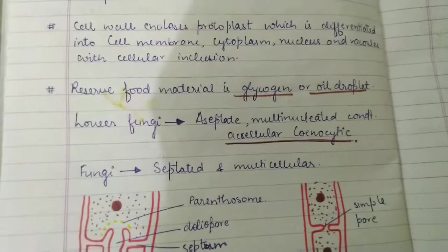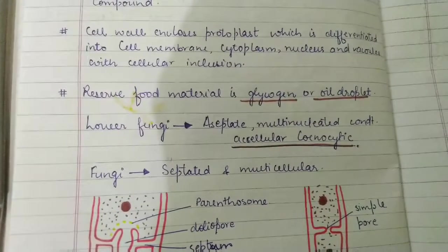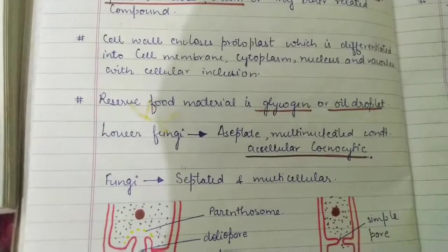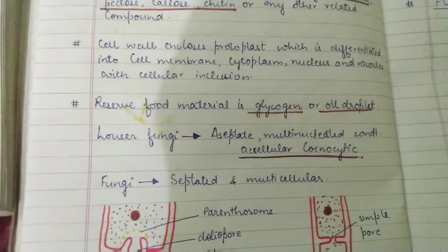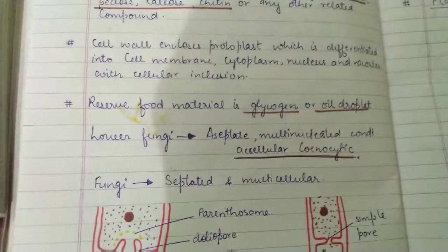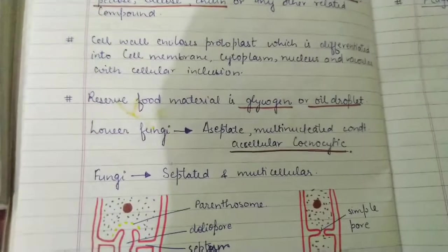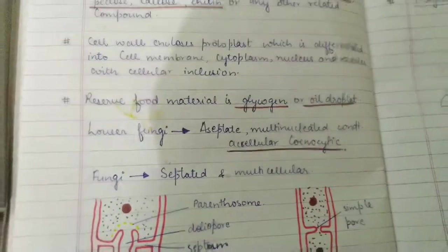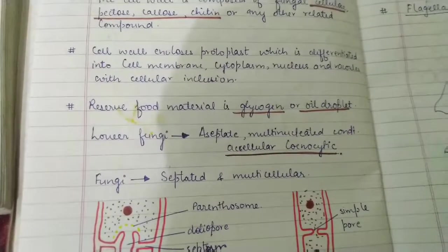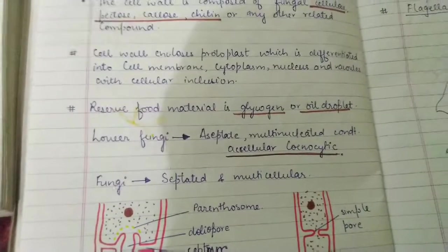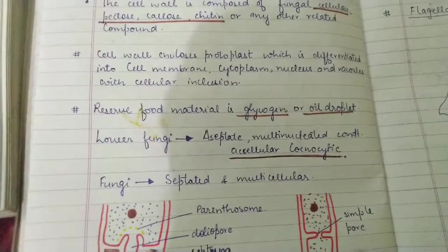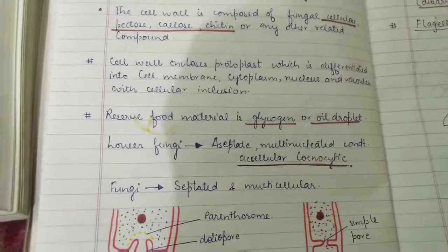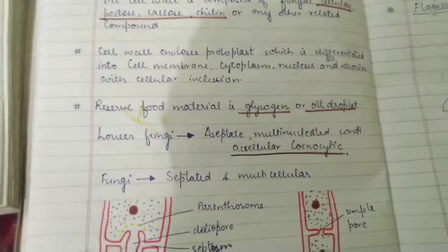Lower fungi and higher fungi differ in their structure — specifically in how their mycelium or hyphae appear. In lower fungi, the hyphae are not septate, meaning there is no wall formation in the filament. They are aseptate, and because there is no wall with many nuclei present within the same continuous tube-like structure, we call this an acellular coenocytic condition.